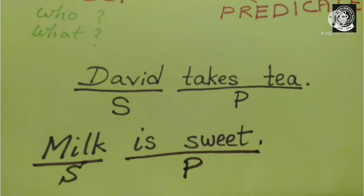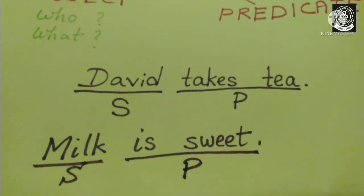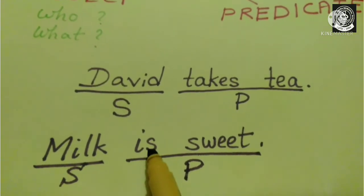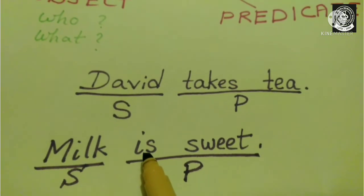Now you must be wondering that I said there will be a verb in the predicate. Now where is verb here? Well, in this case, is is the verb. It is the be verb.